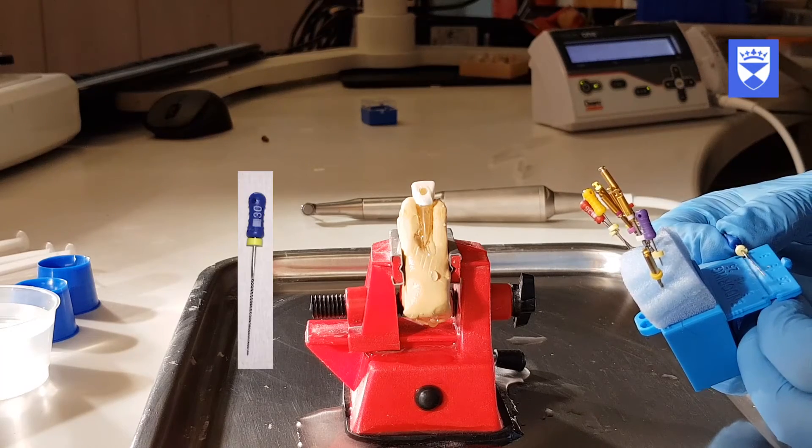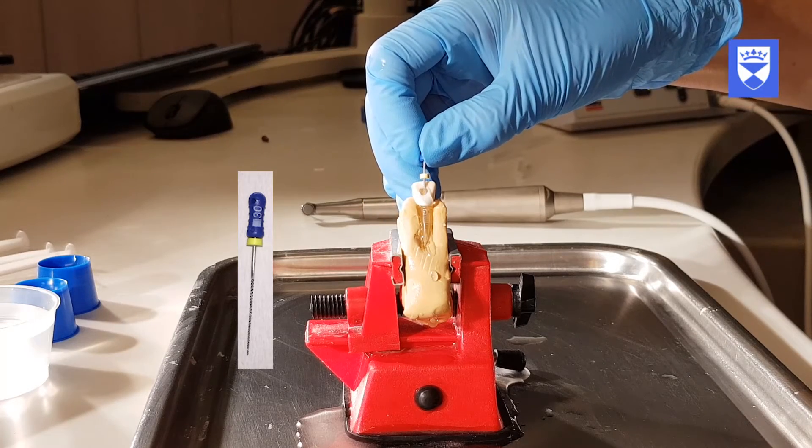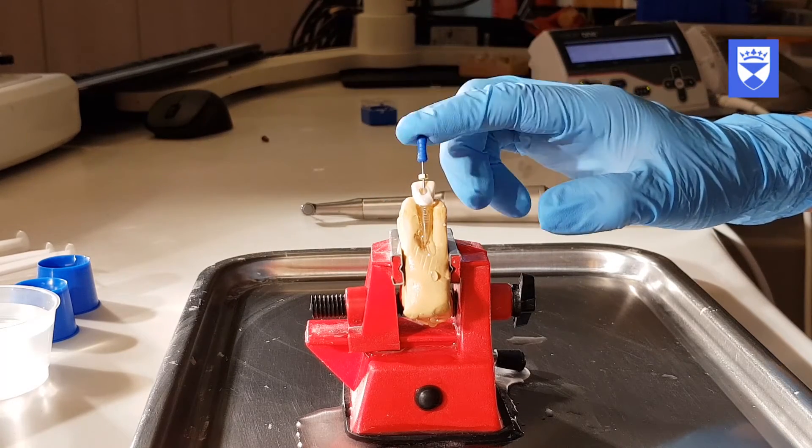Note that the size 30 flexofile sits snugly in the canal and does not move apically when tapped. This indicates that the finishing size of the apical constriction is F3.